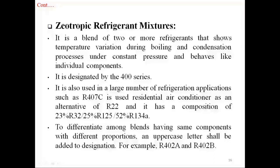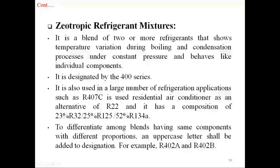Next is zeotropic refrigerant mixtures. It is a blend of two or more refrigerants that shows temperature variation during boiling and condensation processes under constant pressure, and behaves like individual components. It is designated by the 400 series. For example, R407C is used in residential air conditioners as an alternative to R22, and has a composition of 23% R32, 25% R125, and 52% R134A. To differentiate among blends having the same components with different proportions, an uppercase letter is added to the designation — for example, R402A and R402B.